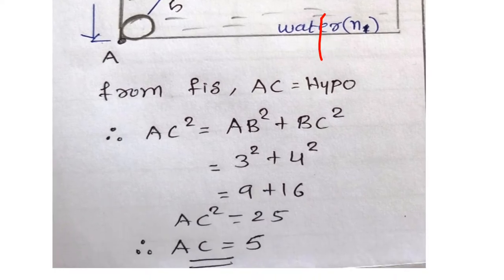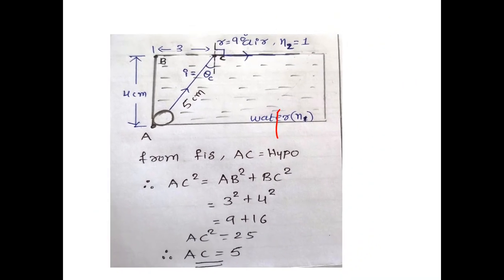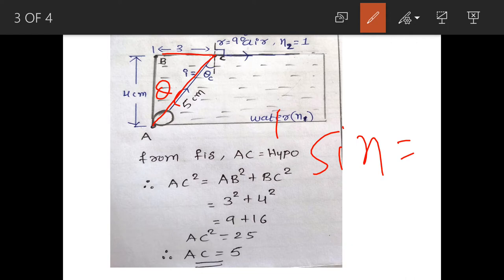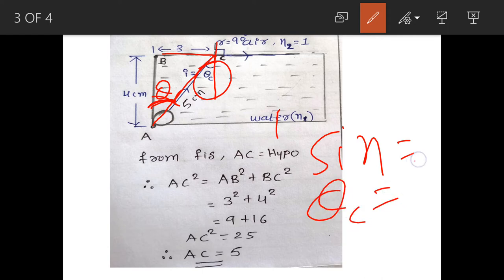AC is equal to 5 cm. Now, since this angle is theta c, applying sine gives sine equals opposite over hypotenuse. Here the opposite is BC and the hypotenuse is AC. Since this is the critical angle, we can write: sin(θc) = BC/AC = 3/5.